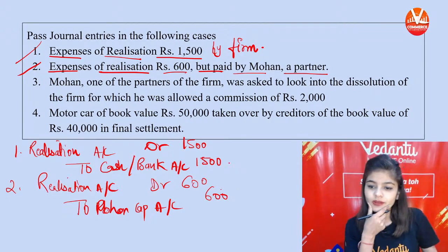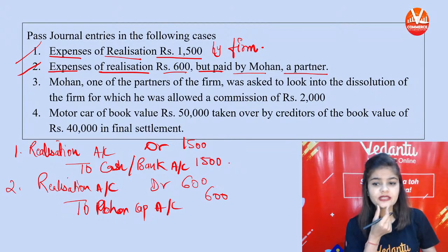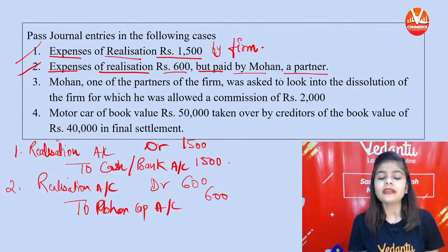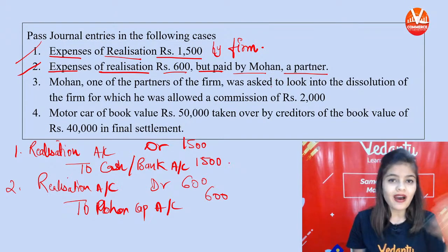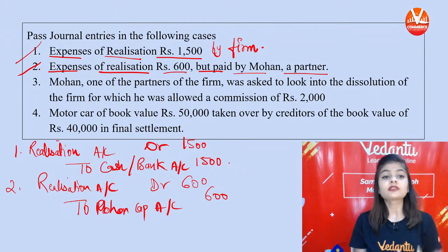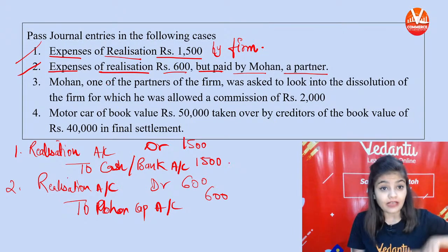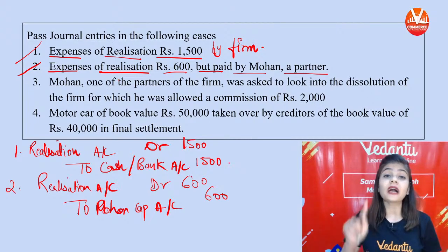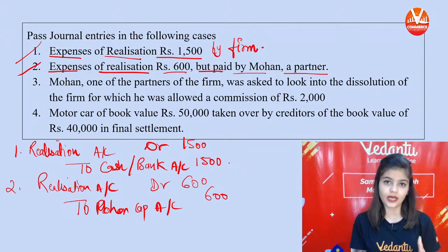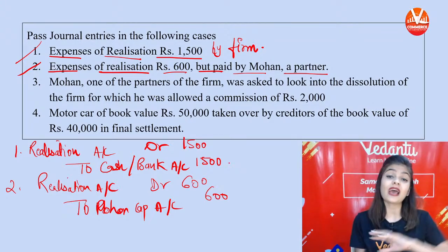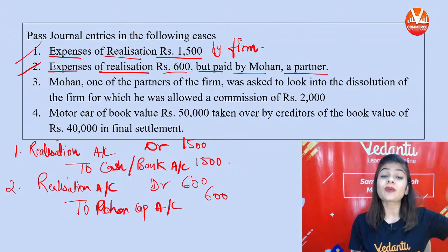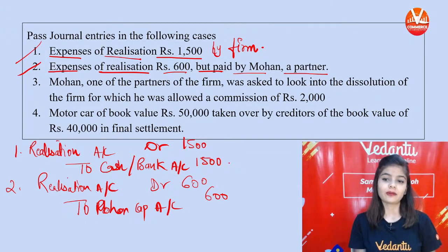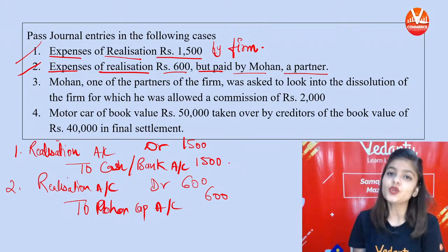Note carefully: the firm must record its own expense even though the partner paid it personally. If it were the personal expense of the partner, no entry would be passed. But since it is the firm's expense paid by the partner, you must pass the journal entry: Realization Account Debit, To Mohan Capital Account.